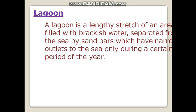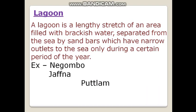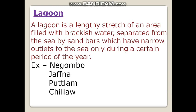Now we will see what a lagoon is. A lagoon is a lengthy stretch of an area which is filled with brackish water, separated from the sea by sandbars, which have narrow outlets to the sea only during a certain period of the year. Examples: Negombo, Chilaw, Puttalam, and Batticaloa.